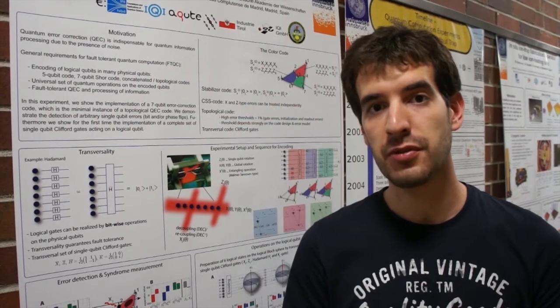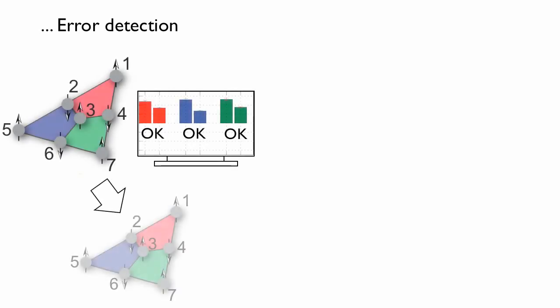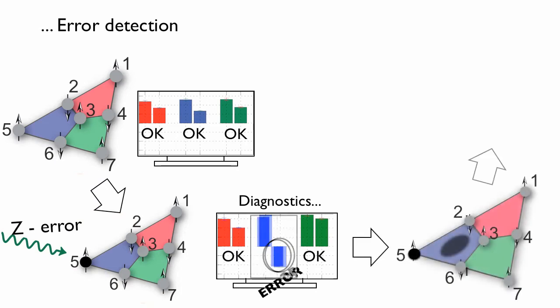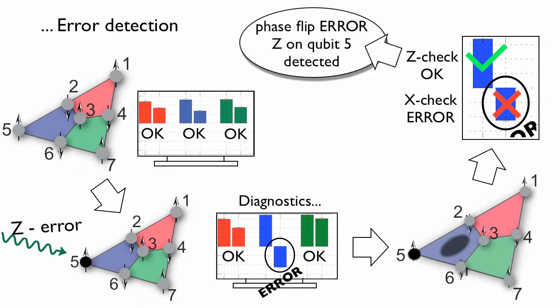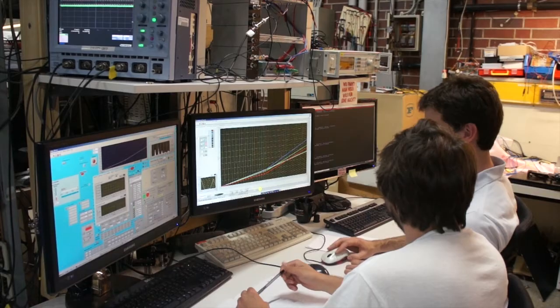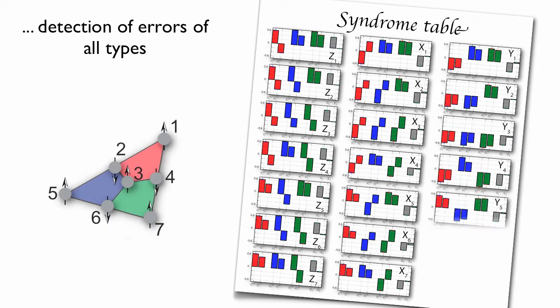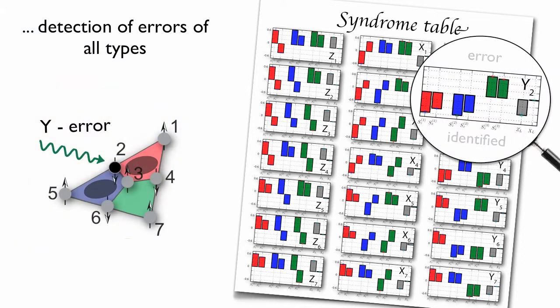After the encoding of the logical qubit in the seven ions, we put it to the test and expose the system to all possible single qubit errors that can occur on any of the seven qubits. Very much like a doctor who, by diagnostics, tries to find out the disease to decide on the right medicine to choose in order to cure the patient. Here, we have been able to show the code is indeed able to correctly detect errors of any type, bit flips as well as phase flip errors or combinations of both, as well as on which of the qubits these have occurred.